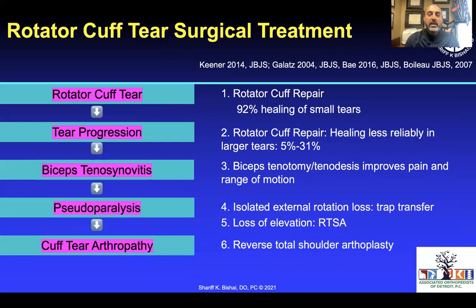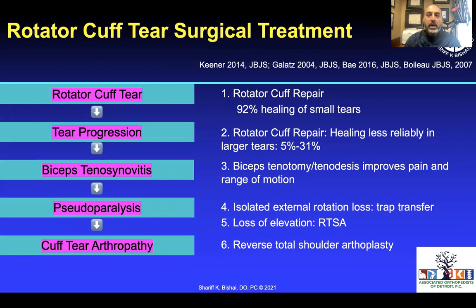With rotator cuff tears we need to understand our surgical treatment options. Smaller tears heal very well — about 92%. Larger tears with progression can be less reliable. We also must decide what to do with the biceps — tenotomy, tenodesis, or nothing. Eventually, patients may progress to pseudoparalysis and an irreparable tear, which depending on arthritic state could require a tendon transfer or even a reverse total shoulder replacement.